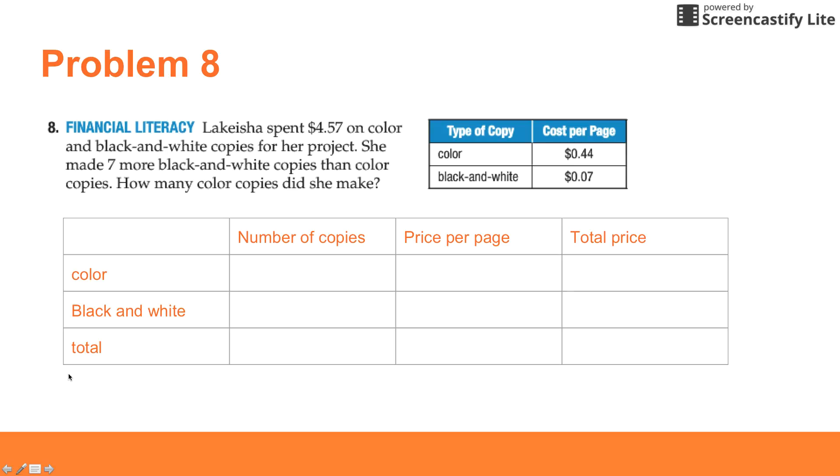For problem 8, we spent $4.57 on color and black-and-white copies for our project, so the total we spent was $4.57. She made 7 more black-and-white copies than color copies. We don't know how many color copies she made, but we know she made 7 more black-and-white copies, so that would be X plus 7. Our total - what do you think our total would be? We're going to add our color plus our black-and-white, so it's going to be X plus X plus 7.